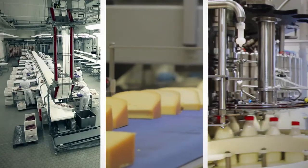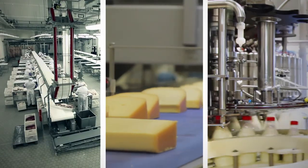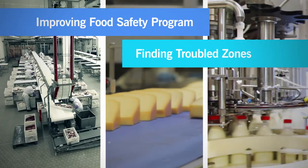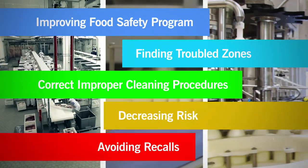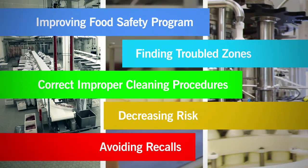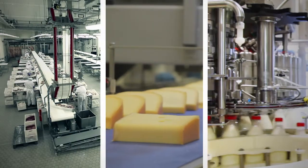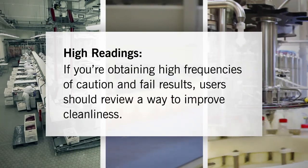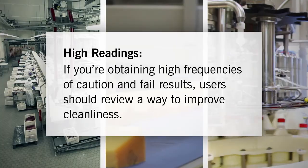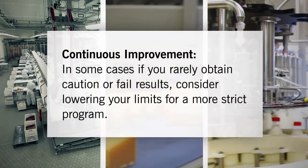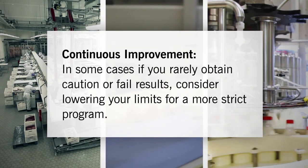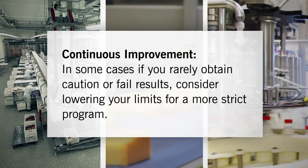Constantly looking to improve your food safety program shows due diligence and is crucial to finding trouble zones, correcting improper cleaning procedures, decreasing risk, and avoiding recalls. If you're obtaining high frequencies of caution and fail results, users should review sanitation materials and procedures. In some cases, if you rarely obtain caution or fail results, consider lowering your limits for a more strict program.